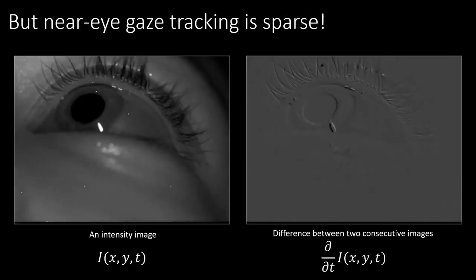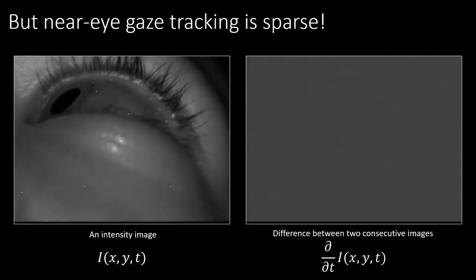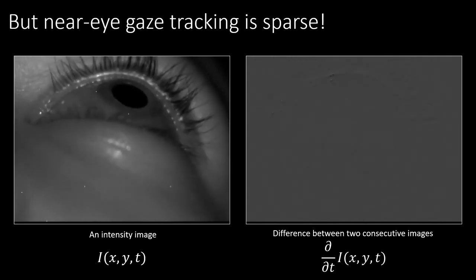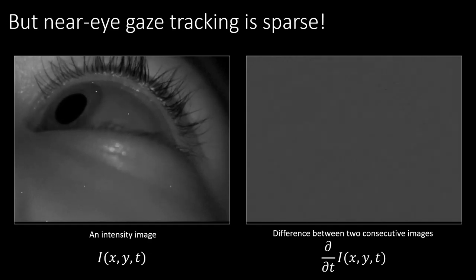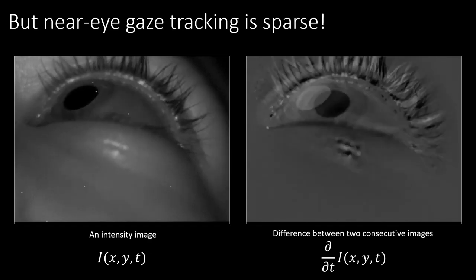Our work builds on the key insight that the data captured by near-eye cameras is sparse. Visualizing the temporal gradient of a captured video sequence shows that only a subset of the pixels actually change in successive frames.